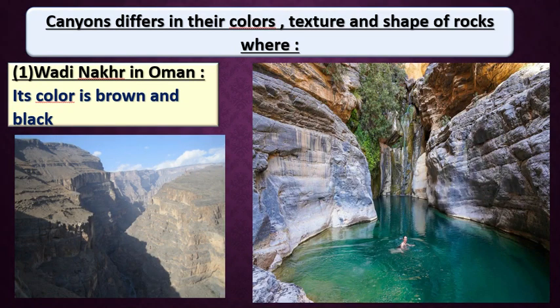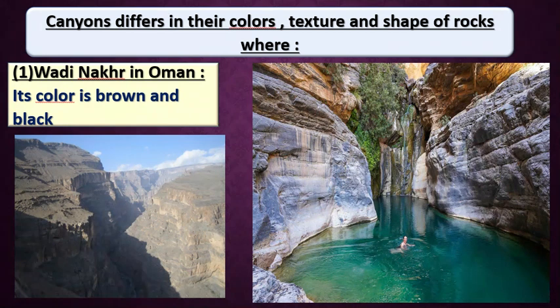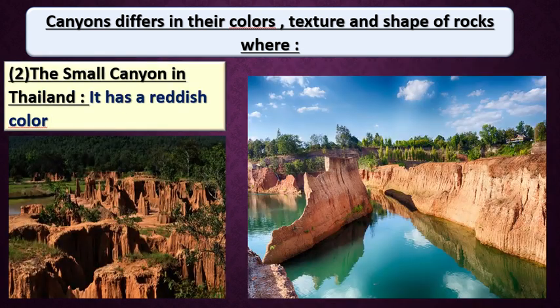Not all canyons have brown and black colors. Another canyon is called the Small Canyon in Thailand. This canyon has a reddish color. Reddish color means not exactly red, but it has a small amount of red - light red. So we have two canyons so far: Wadi Nahr in Oman with two colors - brown and black - and the Small Canyon in Thailand with a reddish, or light red, color.